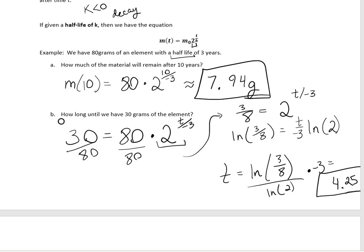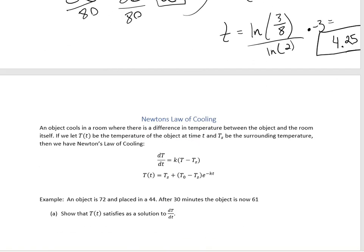Let's check if that makes sense. If the half-life is 3 years and we start with 80 grams, after 3 years we'd have 40 grams. So it makes sense that a little bit longer — 4.25 years — gives us 30 grams. That's pretty solid math.